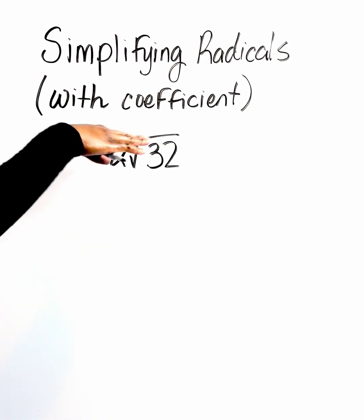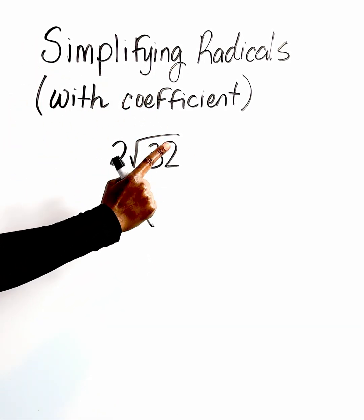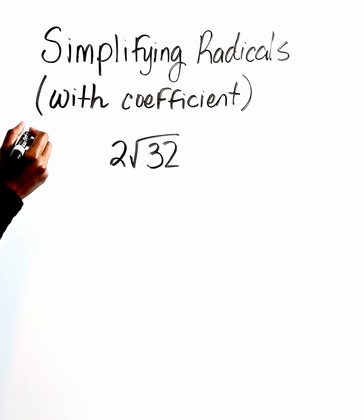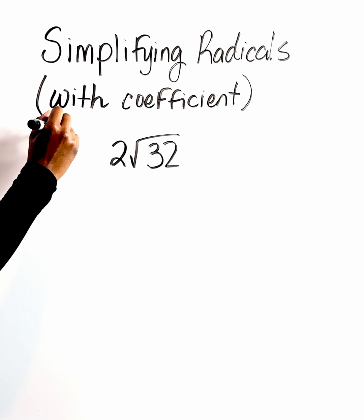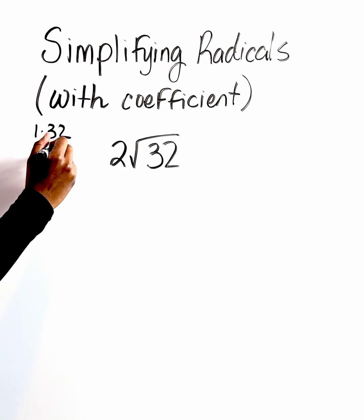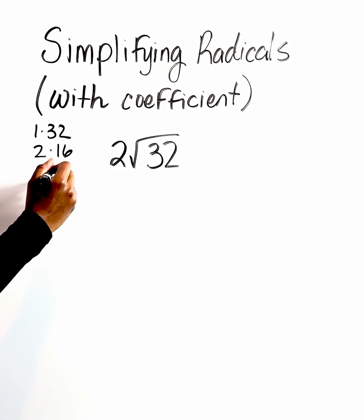So we know when we're simplifying, we're breaking this down. Our focal point is the number on the inside of the radical. The first thing we're going to do is we're going to list our factors. We have 1 and 32, we have 2 and 16, and then we have 4 and 8.